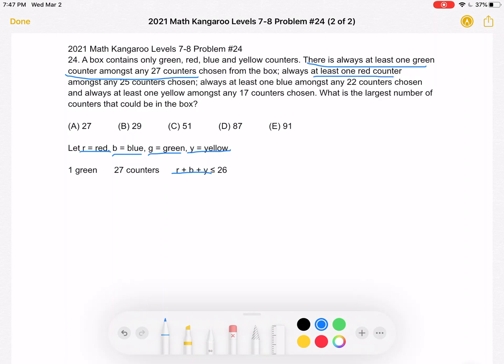There's at least one red counter among any 25 counters chosen. So we have one red, 25 counters. Again, same logic, we'll be saying that the number of green, blue, and yellow, so everything that's not red, must be less than or equal to 24.